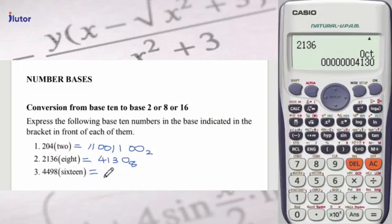So now we press the AC button. The mode is in octal, so we change it to decimal, which is base 10, because we are converting from base 10. So now we input our value: 4498. 4498 equals.